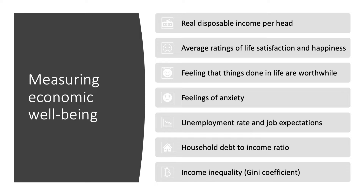Well-being is wider. It does include income per head, but also subjective reported life satisfaction and happiness, the feeling that things done in life are worthwhile, and indicators of stress, vulnerability, and anxiety — so we're starting to build mental health indicators into our well-being assessment. It also considers the labour market: not just the rate of unemployment, but people's expectations about unemployment going forward. Are households indebted? What's the ratio of their debt to income? And income inequality — the Gini coefficient is just one way of measuring that.